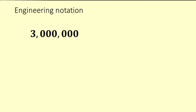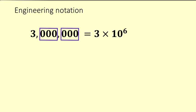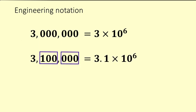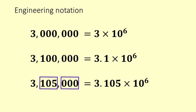What about if it gets another level bigger? Now we've got 3,000,000. There are two blocks of 1,000, so it's 3 times 10 to the 6. Similarly, 3,100,000 is 3.1 times 10 to the 6. And 3,100,500 is 3.1005 times 10 to the 6. You can see the numbers are all about the same magnitude — 3 or 3-point-something times 10 to the 6.